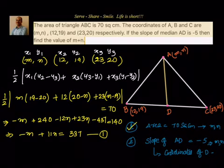So our condition number 1 is: minus M plus 11N equals 337.